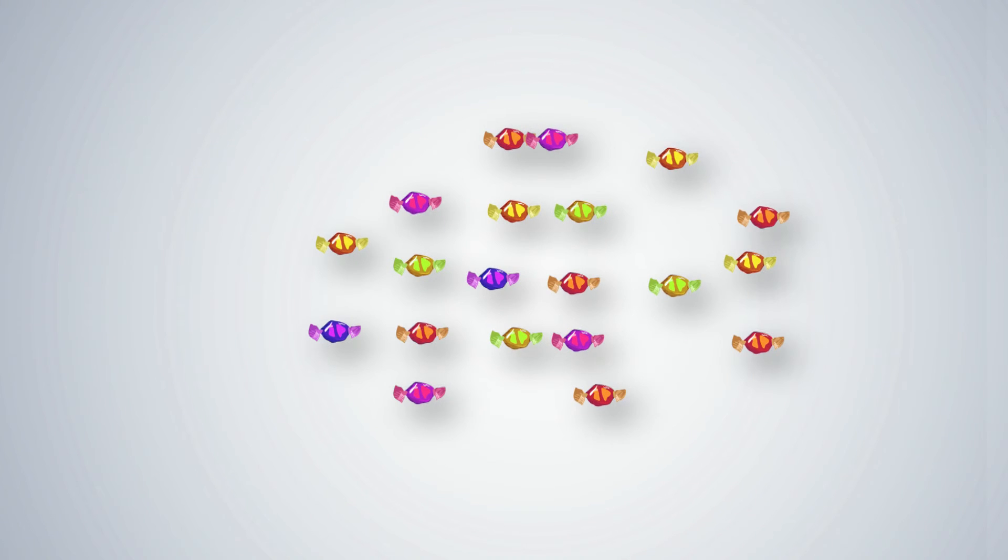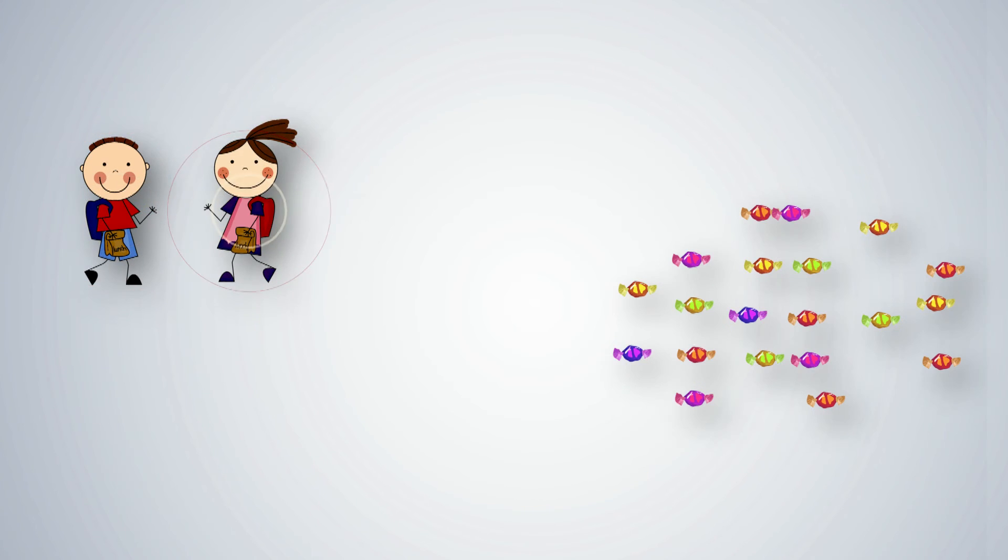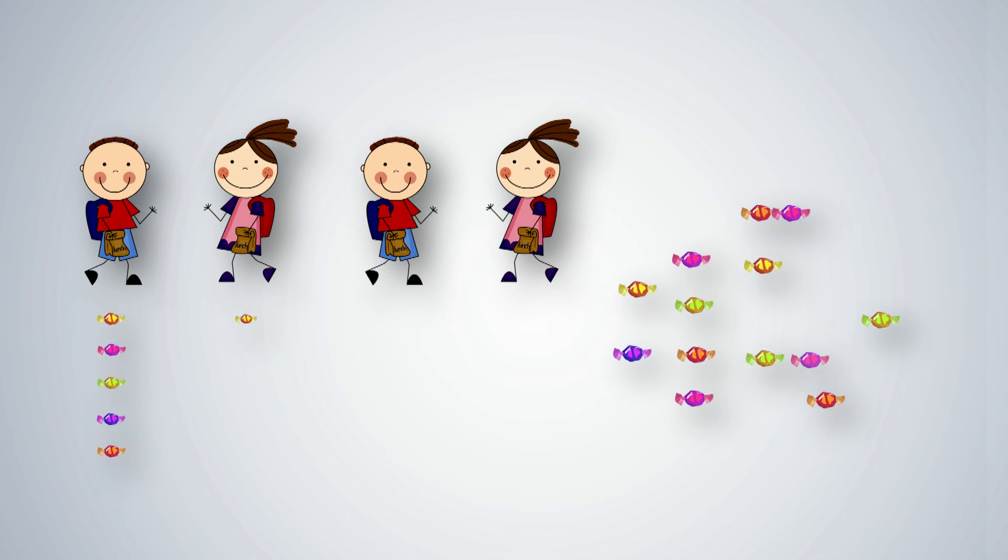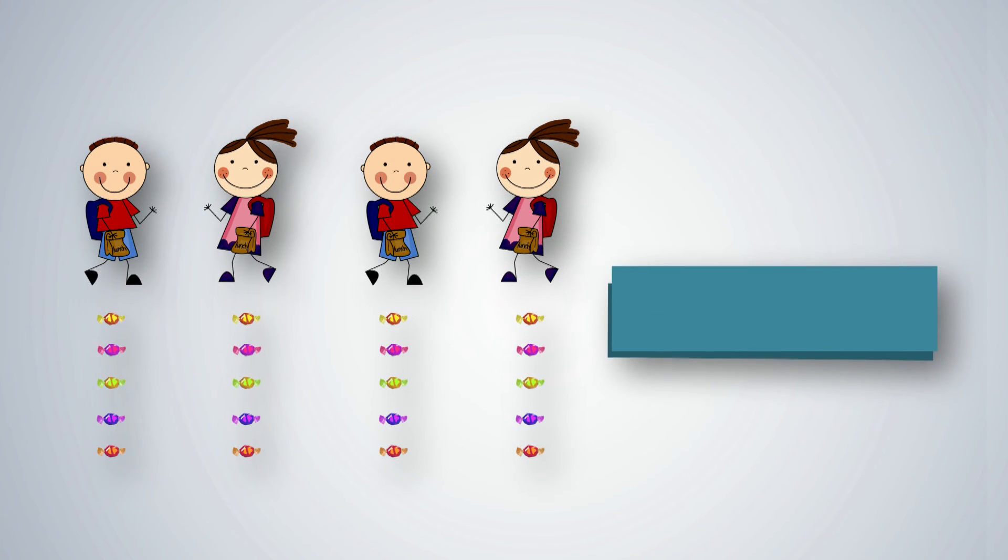It is important to explain the relationship between division and multiplication. In division, we start with the dividend or total. For example, if we want to distribute 20 chocolates to 4 students, how many chocolates will each student get? Here, we apply the process of division.